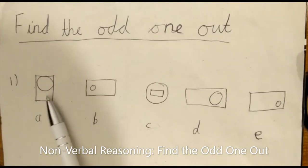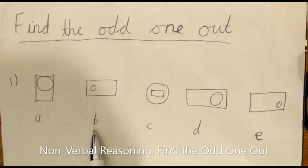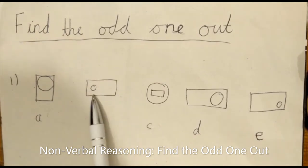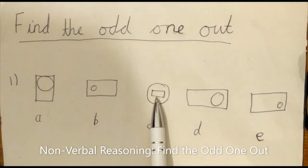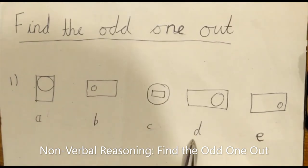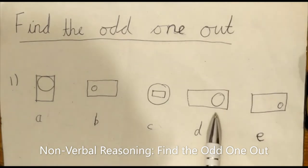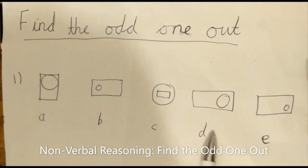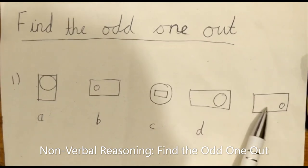Option A is a rectangle facing horizontal with a big circle inside. Option B is a rectangle facing vertical with a small circle inside. Option C is a circle with a small rectangle inside. Option D is a rectangle facing horizontal with a big circle inside. And option E is also a rectangle with a circle inside.